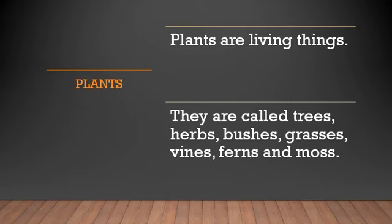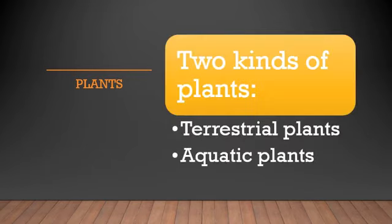Plants are important to us. What is the difference between plants and animals? Plants cannot move and animals can move. Animals can move from one place to another, but plants cannot — they are always present in just one place. We are going to learn about two kinds of plants: terrestrial plants and aquatic plants.